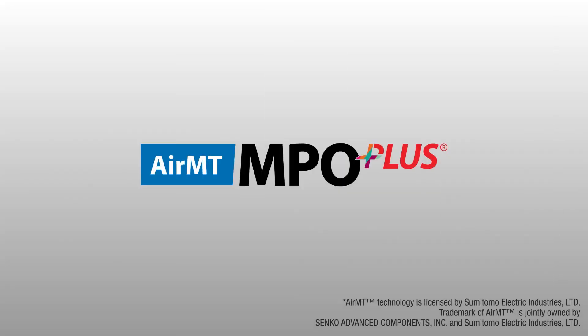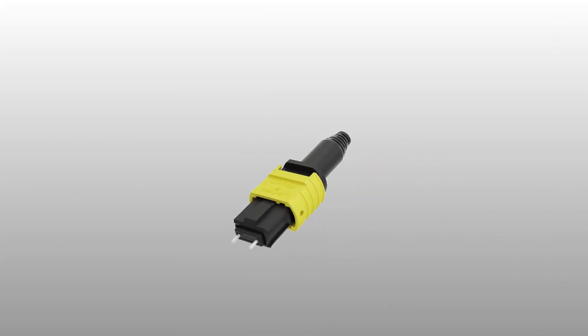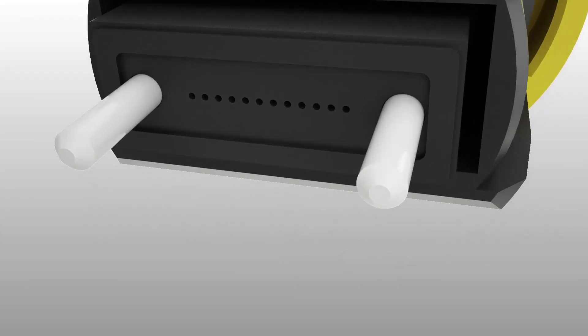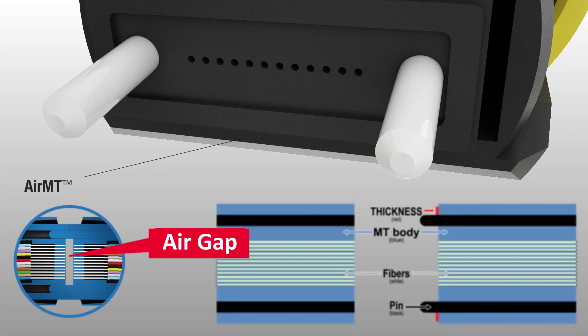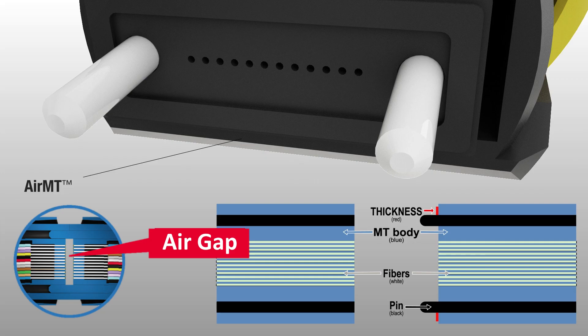This is one of the many featured products Senco is releasing this year. It is revolutionary MTMPO technology built with a controlled air gap technology that provides excellent connection anytime. What is the reason for the air gap? Does it help in any way?